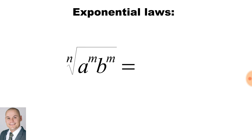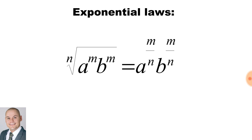To simplify this term, we have two bases a and b both to the exponent of m. In order to get rid of the root sign, we would have a with exponent m over n and b with exponent m over n. Thank you very much for watching this video. Please remember to hit the like button and to subscribe.